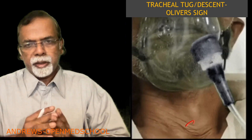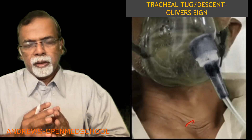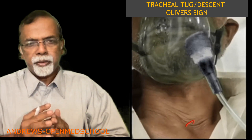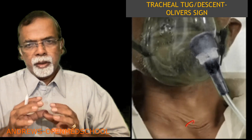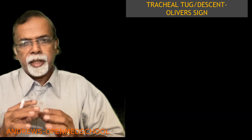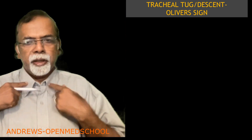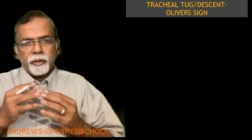So what is tracheal tuck? This is the classical sign that you get in aortic aneurysm. With each heartbeat the trachea descends, and this is identified by standing behind the patient and palpating the cricoid cartilage. You palpate the cricoid cartilage from behind, and with each heartbeat you will see that the cricoid is being pulled down. That is the classical tracheal tuck or Oliver's sign.